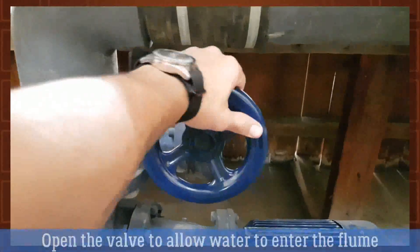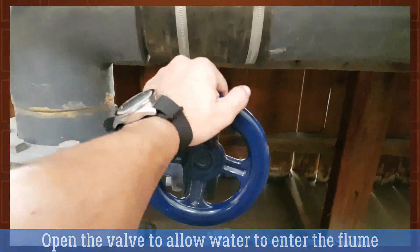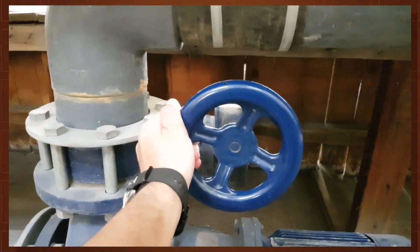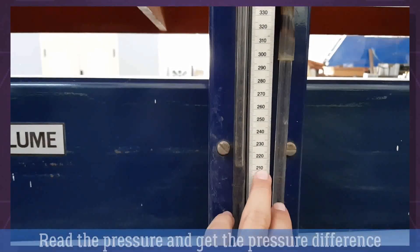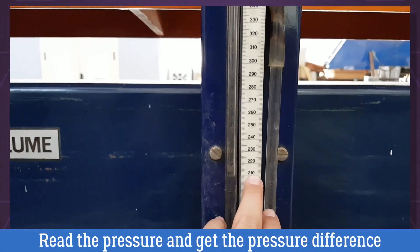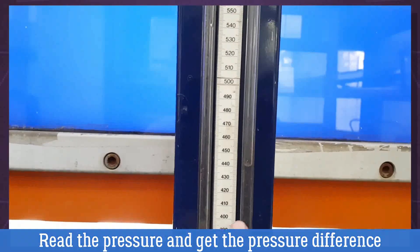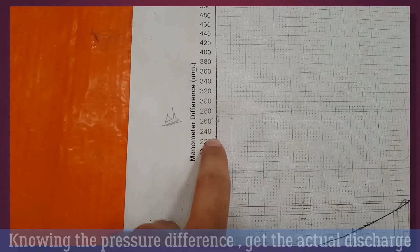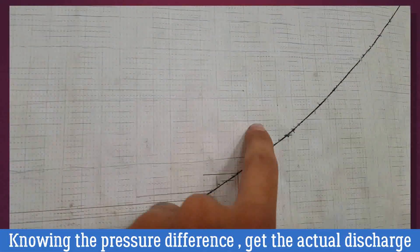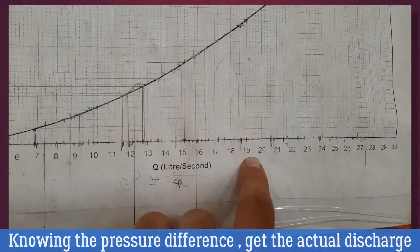Open the valve to allow water to enter the flume. Read the pressure and get the pressure difference. Then after knowing the pressure difference, get the actual discharge using this chart.